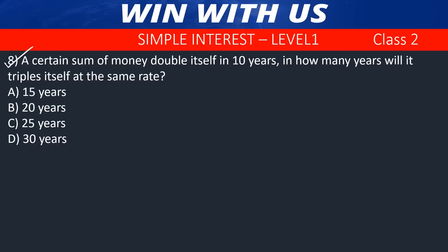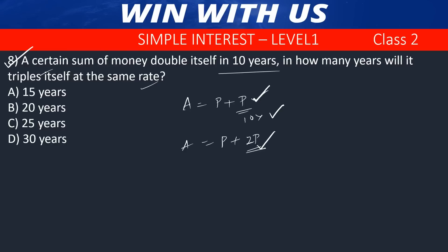Question number 8. A certain sum of money doubles itself in 10 years. In how many years will it triple itself at the same rate? If it doubles in 10 years, then interest equals principal in 10 years. To triple means Amount = 3P, so interest needed = 2P. Since 1P interest takes 10 years, 2P interest takes 20 years. Answer: 20 years.